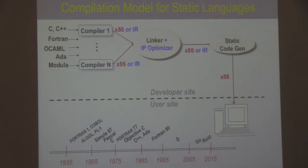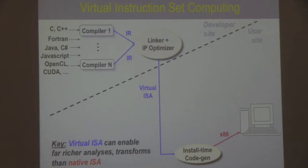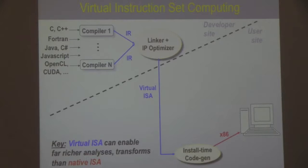This model hasn't really changed since the 1950s. In contrast, virtual instruction set computing means that the code shipped from the developer to the end user's machine is not machine code but a virtual instruction set — typically something that enables much richer analysis and transformations than a native hardware architecture. You can then compile this virtual instruction set code to native code either at install time, or just in time as is done for Java and C#.